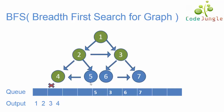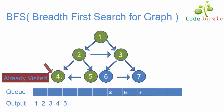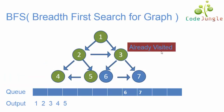Now coming to element 5: element 5 has a neighbor node, element 4. However, as element 4 has already been visited, it will not be pushed into the queue. Element 5 will be popped out of the queue and moved to the output. Next, element 3 appears in the queue, but as 3 is already visited, it will be popped out and will not be included in the output.